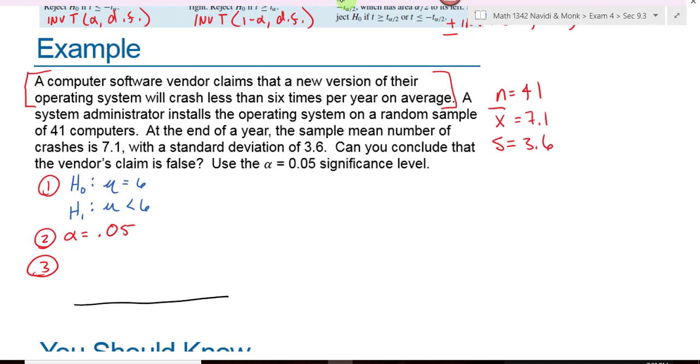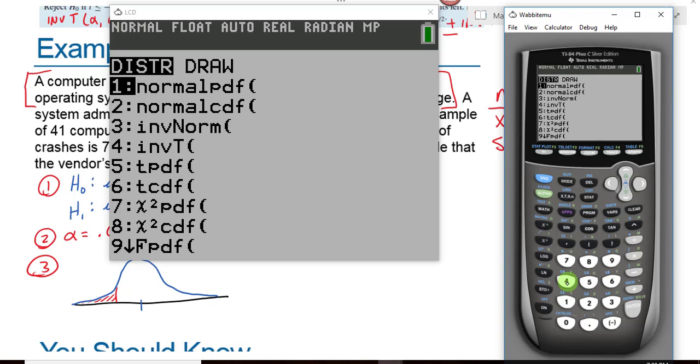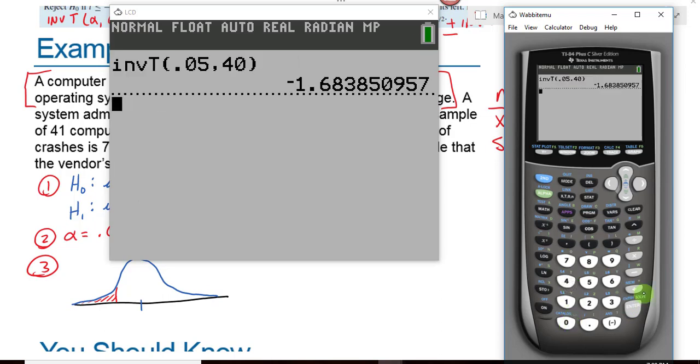The next thing we do is identify what our significance level is. We were told that was 0.05. And then we need to draw a graph. The t distribution will be symmetric and unimodal. Will this be a left tail, right tail, or two tail test? So my alpha is going to all be over here on the left hand side. And I need to find my critical value. How do I find that critical value? So we hit 2nd. Vars, inverse t is number 4. My area will be 0.05. What will my degrees of freedom be? 40. My critical value is negative 1.684.